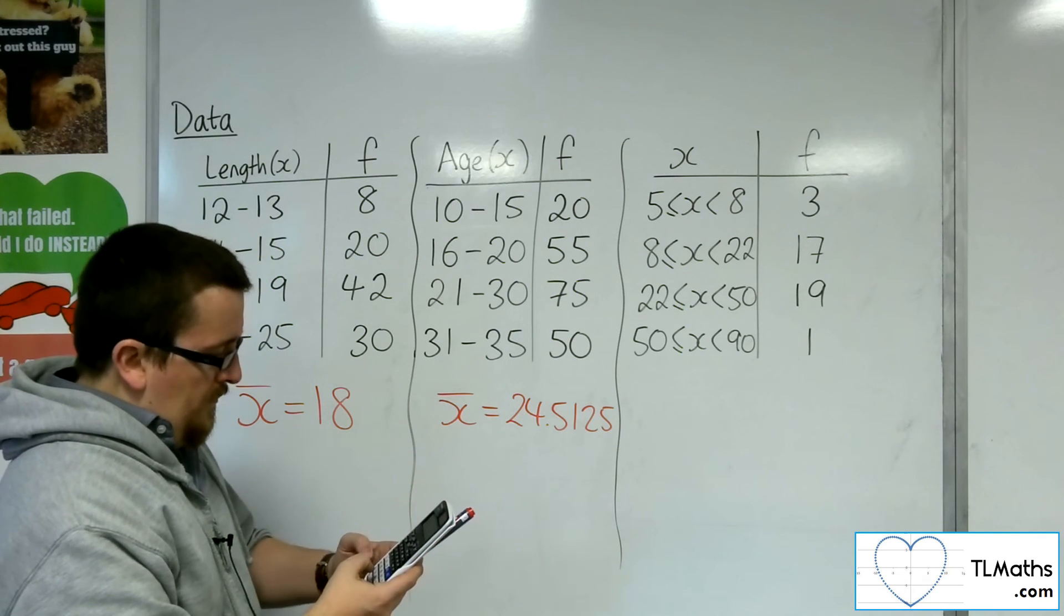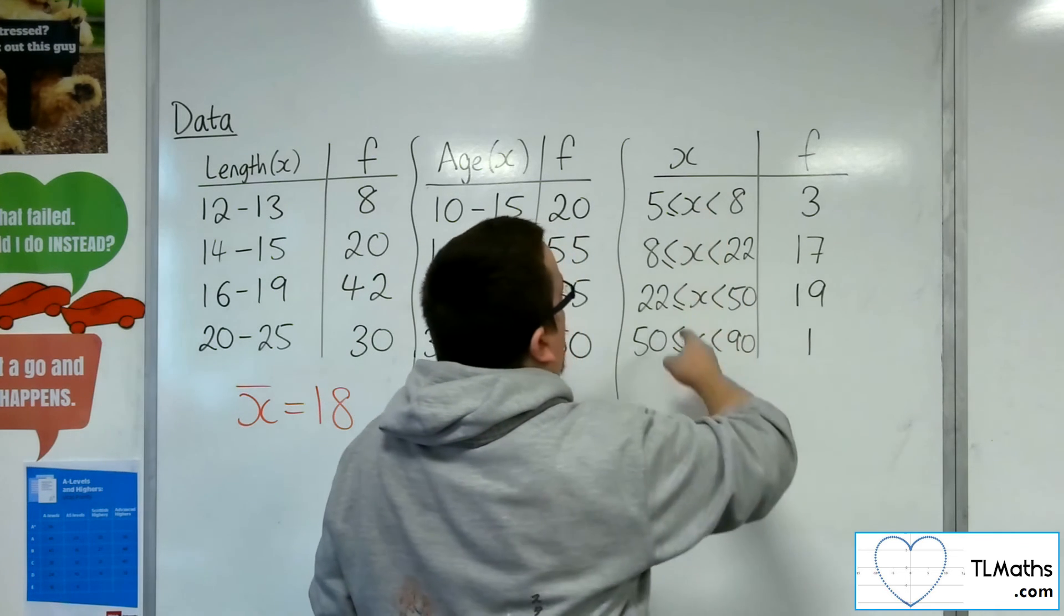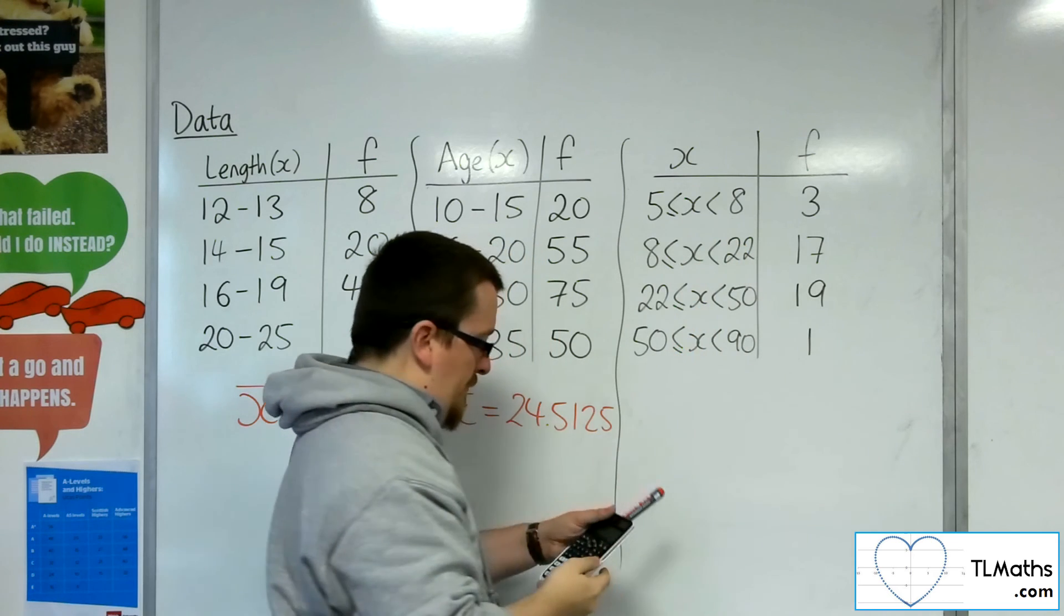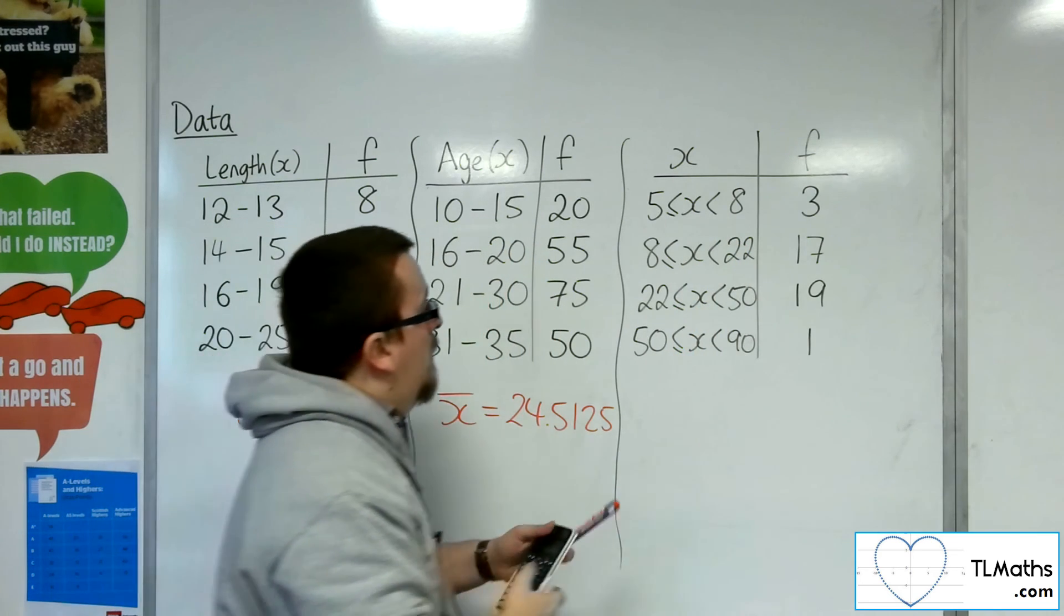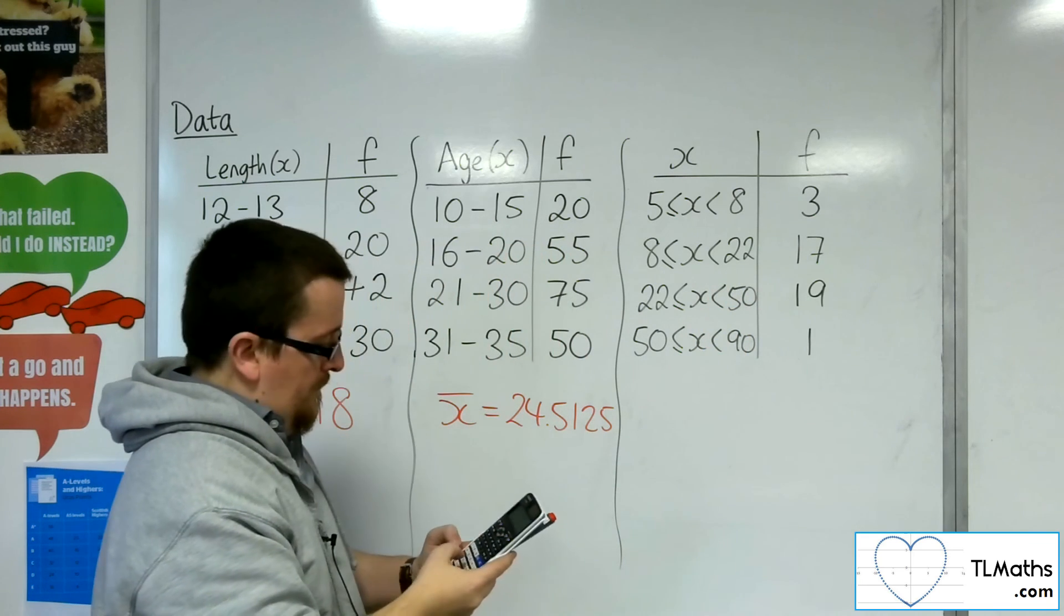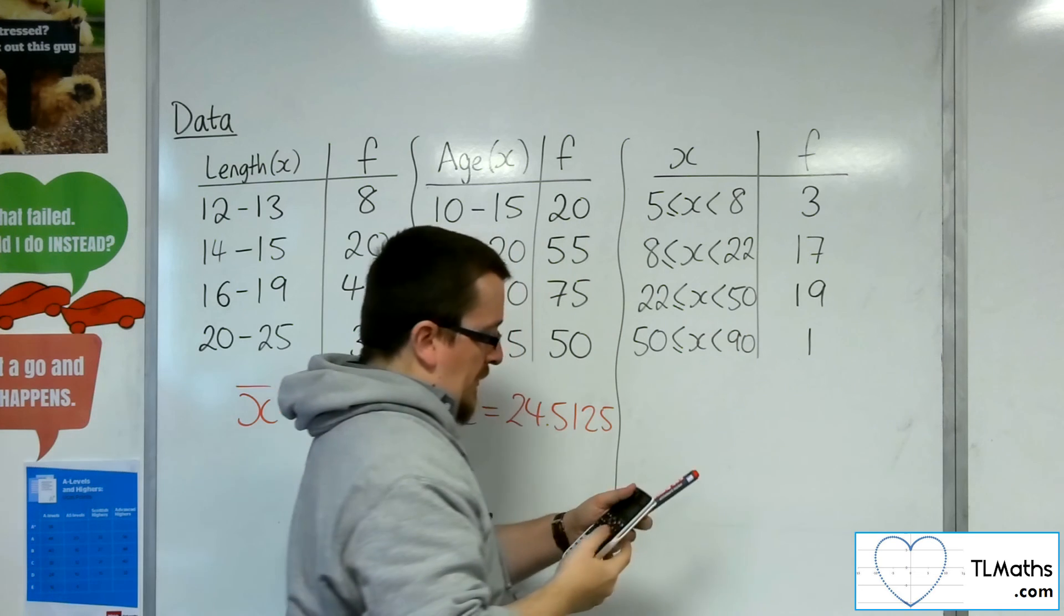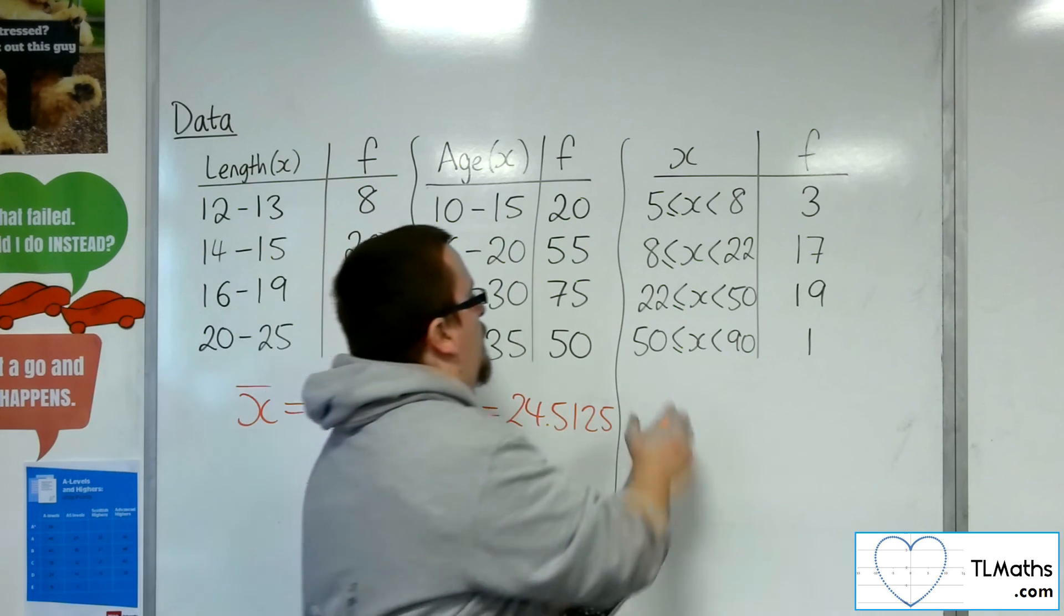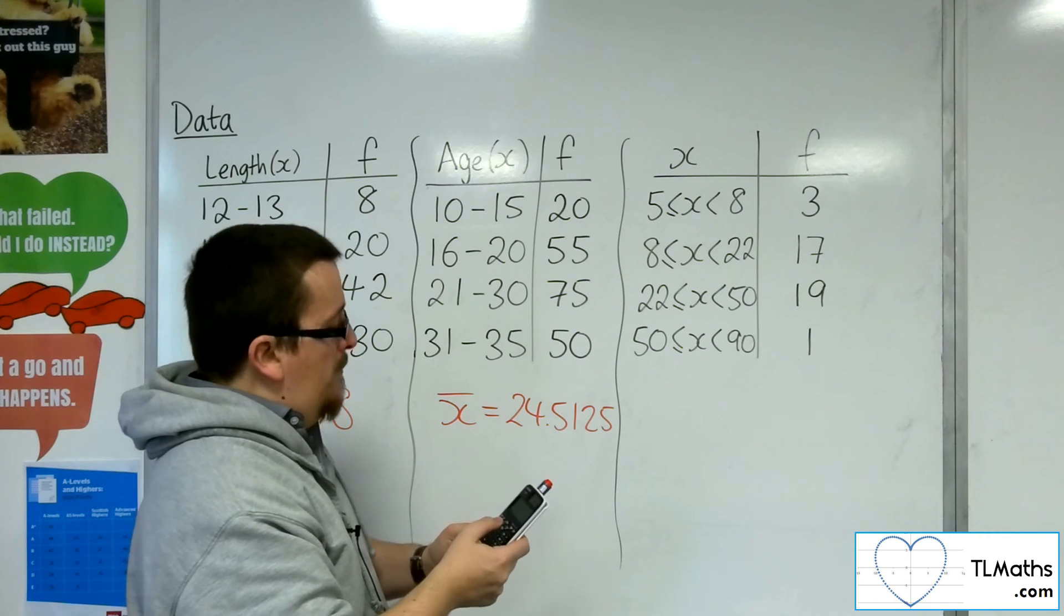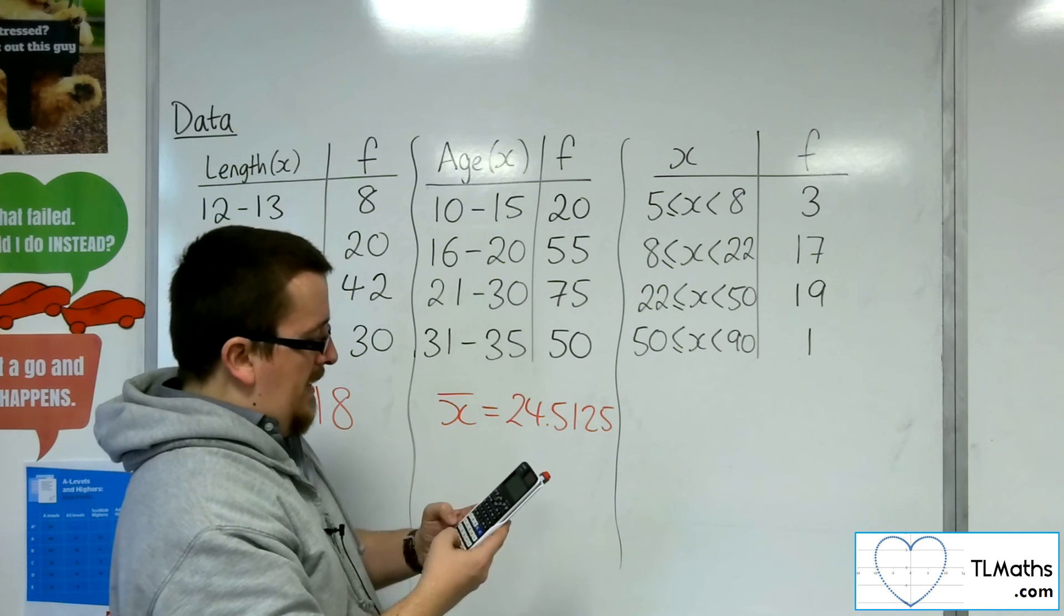Menu, number 6, one variable, midpoints of these groups: 5 plus 8 is 13, half of that is 6.5. 8 and 22 is 30, half of that is 15. 22 plus 50 is 72, half of that is 36. 50 and 90 is 140, half of that is 70. Then pop in the frequencies, 3, 17, 19 and 1.